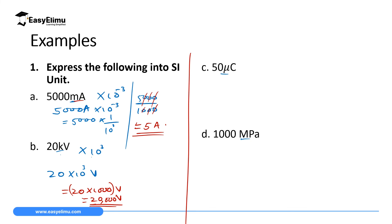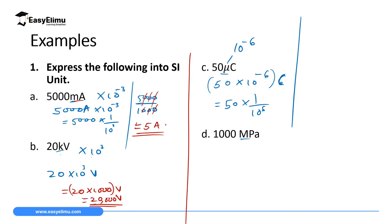Third: 50 microcoulombs. Micro means times 10 to the negative 6. So 50 μC equals 50 times 10 to the negative 6 coulombs, which is 50 times 1 over 10 to the power 6, which equals 50 divided by 1,000,000. This gives us 0.00005 coulombs.